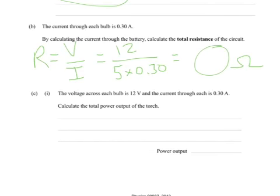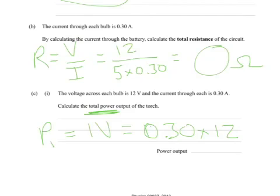Part C(i): The voltage across each bulb is 12 volts, the current through each is 0.30 amps. Calculate the total power output of the torch. So we can work out the power for each bulb. For 1, that's going to be the current times the voltage, which is 0.30 times 12, which is 3.6 watts. So for 5, we could just times that by 5, so the power of 5 is 5 times the power of 1. The other way you could do this is to use the total voltage and the total current that we worked out there, so 12 times 5 times 0.30.